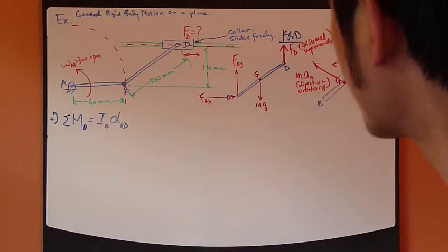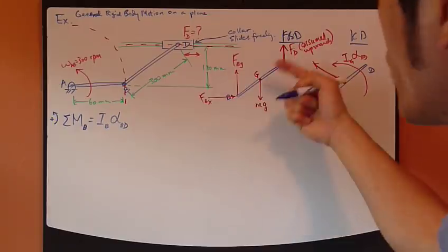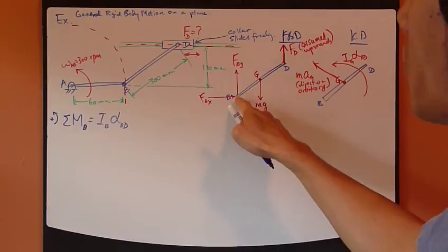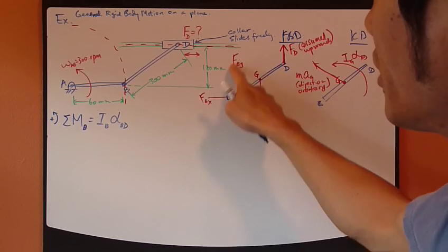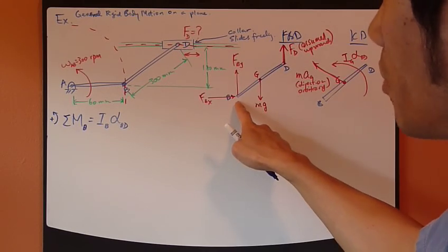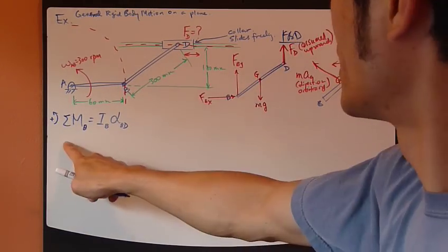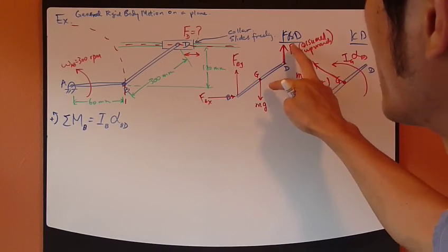Left-hand side, looking at the whole free body diagram, knowing that these two forces pass through point B, so the moment arm is zero, which means that these two forces don't create any moment at all, so they drop out of this equation. So, the only two forces to survive are these two.